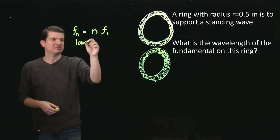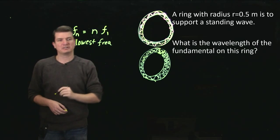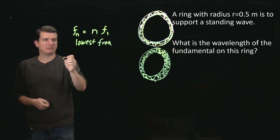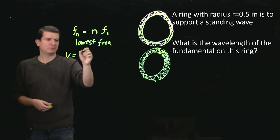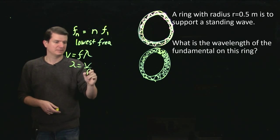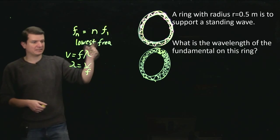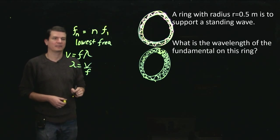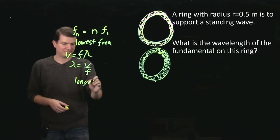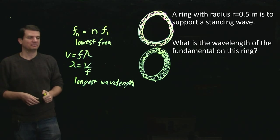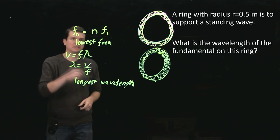So I want the lowest frequency standing wave, and I want to know its wavelength. But if I want to talk about wavelength, then let's think about that. So what do we know? We know that the speed of a wave is the frequency times the wavelength, which means the wavelength is the speed divided by frequency. So if I'm taking the lowest frequency, then that's the longest wavelength. So I want the longest wavelength in order to get this fundamental wavelength that I'm going to be working with.